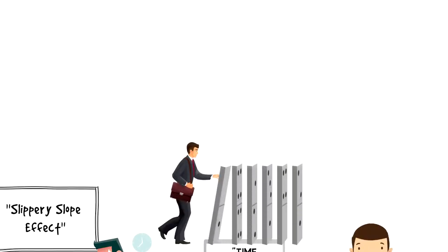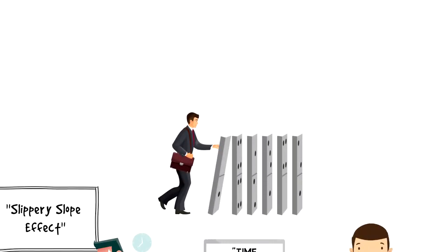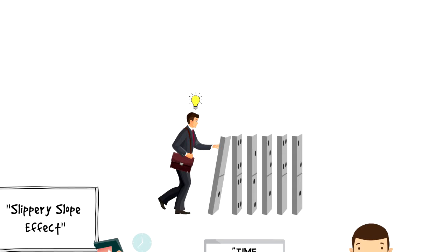Slippery slope effect is often viewed as a logical fallacy in which a relatively small first step leads to a chain of related events culminating into something significant.